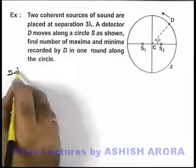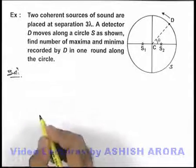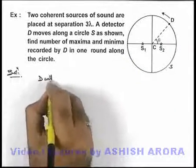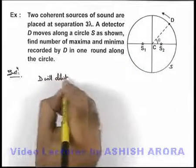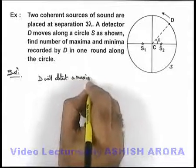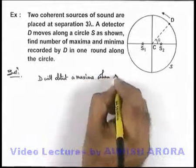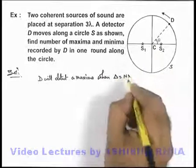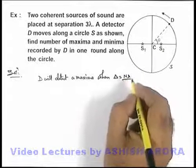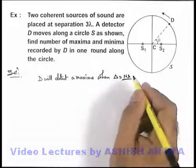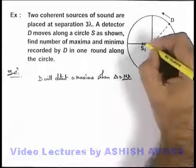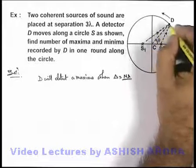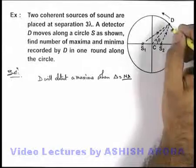In this question, when the detector is moving round the circle, D will detect a maxima when the path difference of the waves at the location of the detector is equal to n lambda. Because when path difference is n lambda, constructive interference takes place and it detects a maxima. From S1 to detector and S2 to detector, as these 2 waves are approaching, their difference varies as the detector moves round the circle.